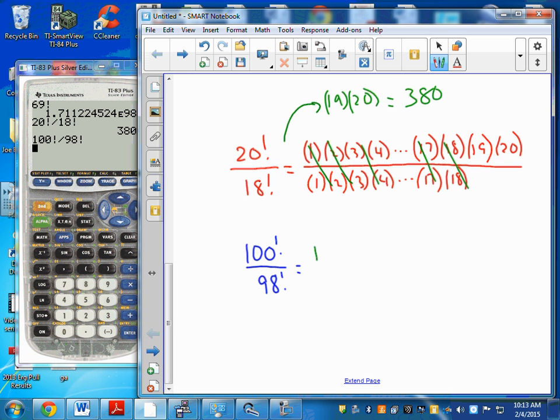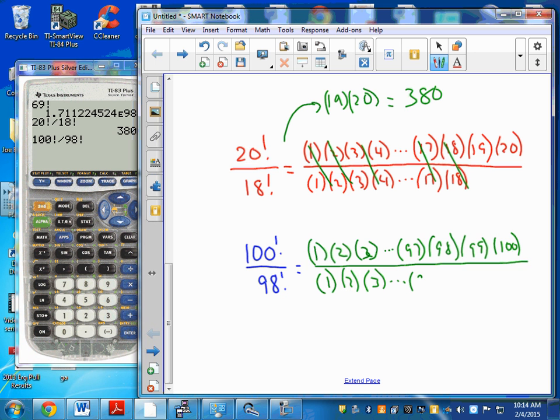So even though the calculator can't do this, I can do it pretty easily if I just remember 100! is 1 times 2 times 3 all the way out, there's 97 times 98 times 99 times 100. That's 100!. 98 is almost as large. 98! is 1 times 2 times 3 all the way out, 97 times 98. And so they all cancel, all the factors except for 99 times 100. So this is 9900 there, and so I can do that problem—no calculator needed. And in fact, the calculator can't do it for you.